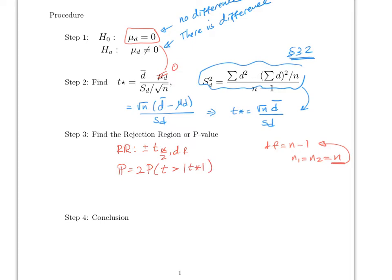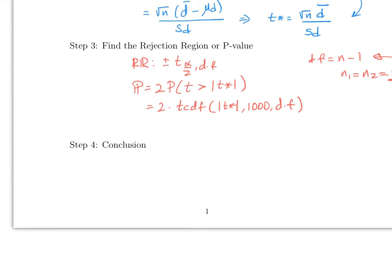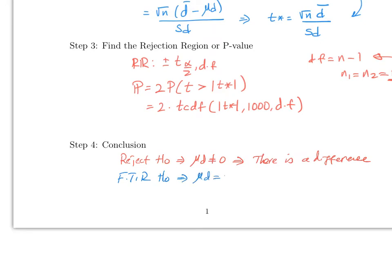Using the calculator, the p-value is 2 times TCDF of the absolute value of t-star, 1000, then the degrees of freedom. The conclusion is either reject H0, meaning mu_D is not equal to zero so there is a difference, or fail to reject H0, meaning mu_D equals zero and there is no evidence of a difference between before and after.